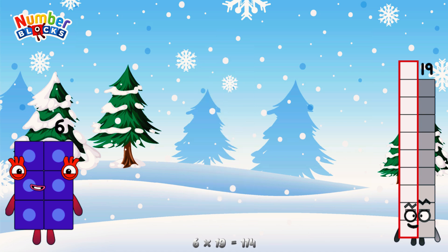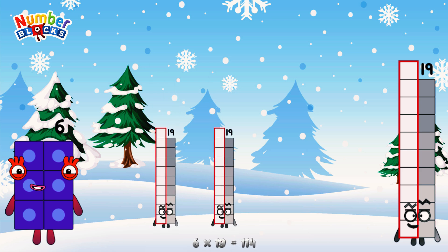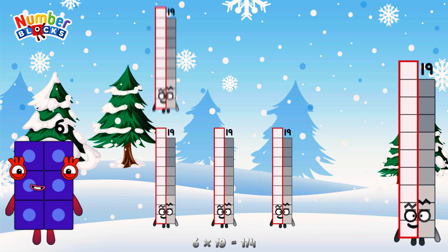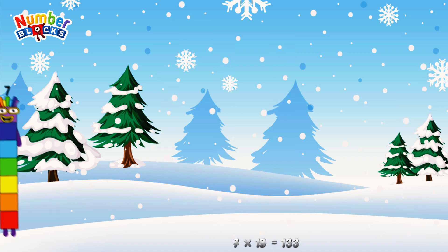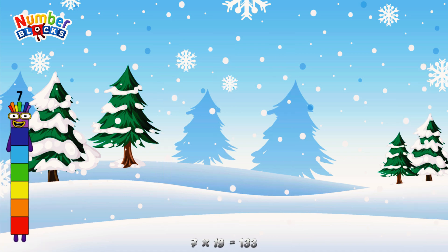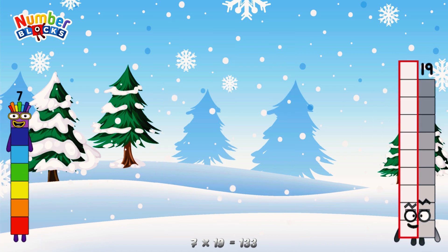Or, we have 6 19s: 19, 38, 57, 76, 95, 114. 7 times 19 is equal to 133.